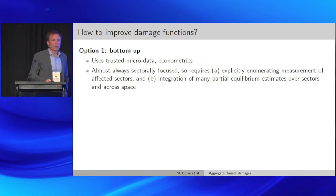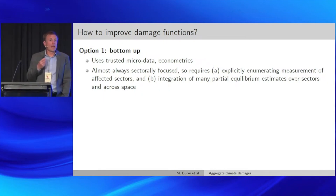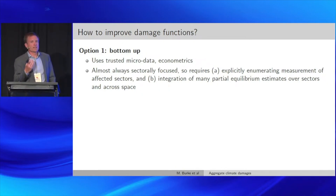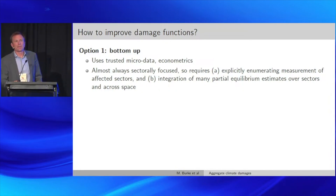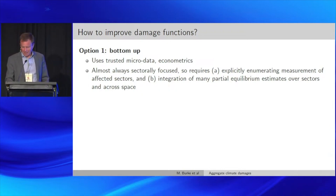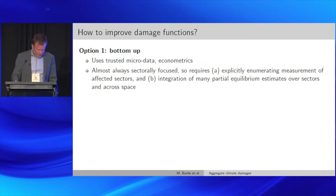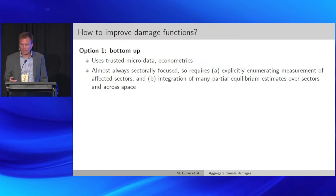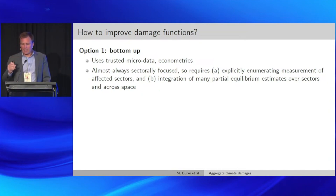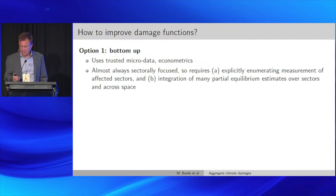Right now we don't have a great way to integrate across sectors. Tama and co's main approach is to simply add up the estimates across sectors, which is sensible absent better ideas. There are great opportunities to integrate with folks thinking about spatial trade models as a way to do that. The bottom-up estimates are excellent, data-driven, and as Tama showed, really important and influential in setting the social cost of carbon in the US and globally.